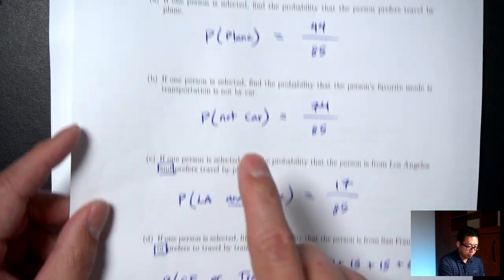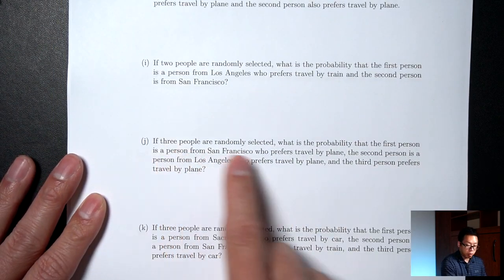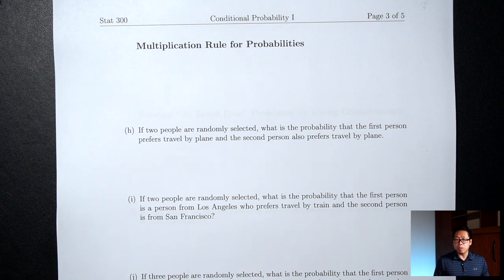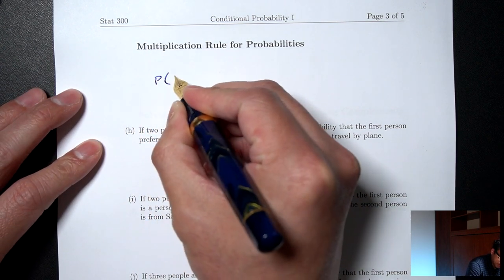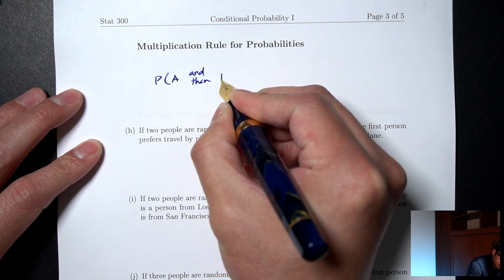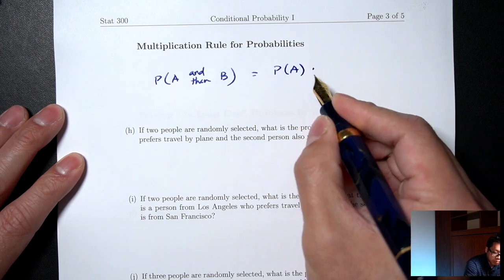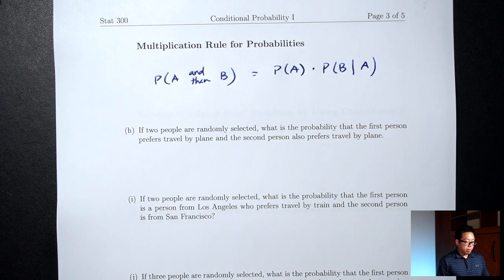Everything we've talked about so far has said 'if one person is selected.' Now we're asking about two or three people. To find probabilities when selecting more than one person, we can think of it in steps: selecting three people is the same as selecting one person, then a second, then a third. We need the multiplication rule, which tells us P(A and then B) equals P(A) times P(B | A already occurred).